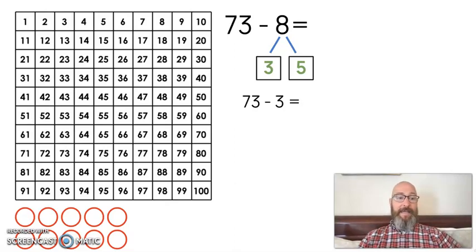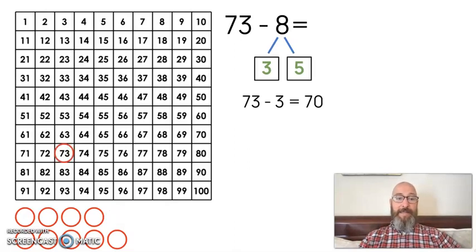We're going to subtract the 3 first. We know that 73 minus 3 is 70. Let's prove that. I have 73 already marked, I'm going to take away 3: 1, 2, count with me, and 3. It does get 70. Because essentially what we're doing is we're taking away the 3 from 73, making it a 0, which is what we do. We take away all the ones until there's 0.